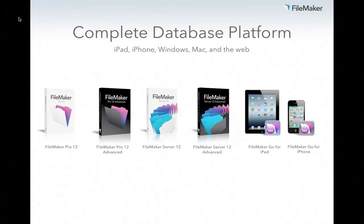So everything FileMaker Pro is, plus the script debugger, the ability to create custom menus, and much more. FileMaker Server is the hub of a FileMaker deployment, where you host all your databases for up to 250 concurrent FileMaker Pro and FileMaker Go connections. You can have up to 125 databases on a given FileMaker server, and it even allows you to connect to ODBC data sources. FileMaker Server Advanced adds ODBC data source capabilities, instant web publishing, and more.